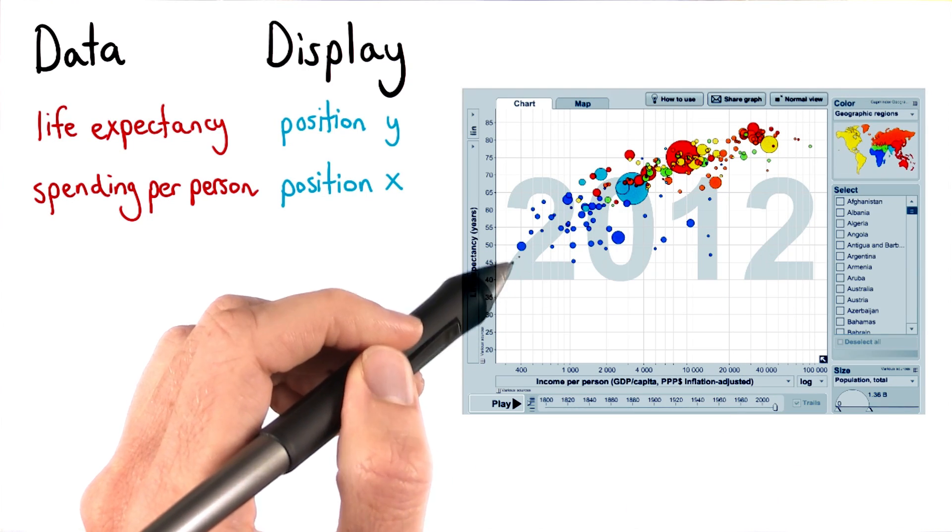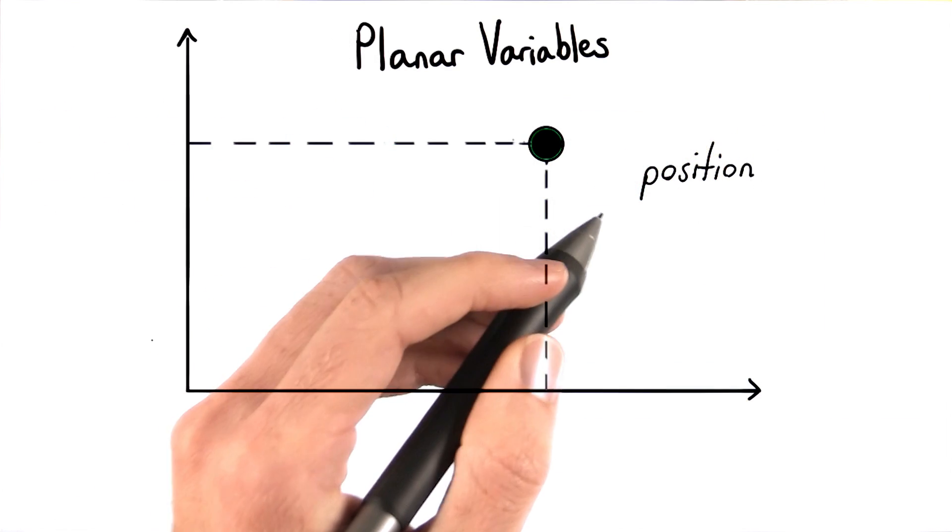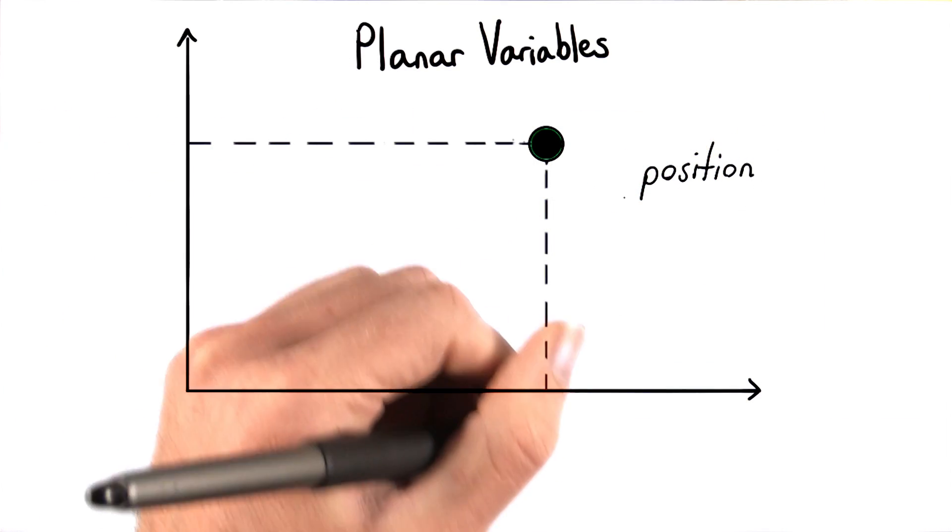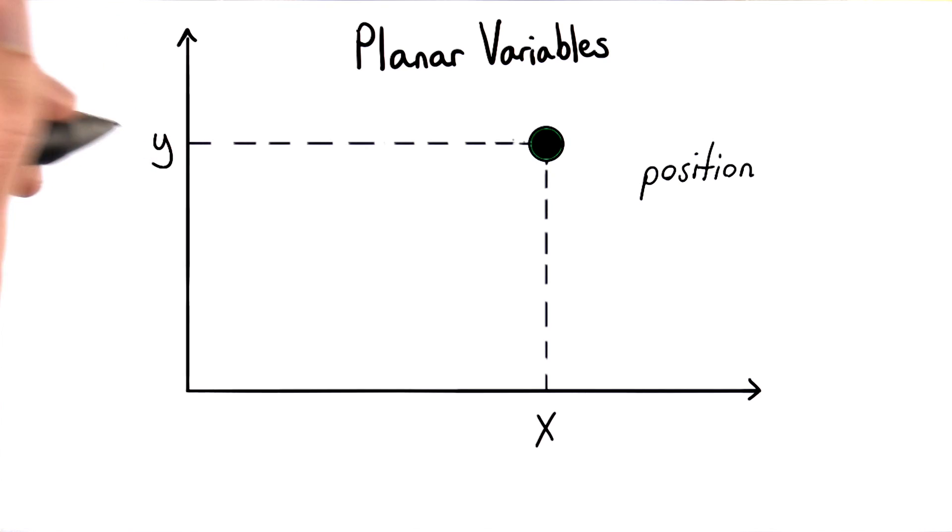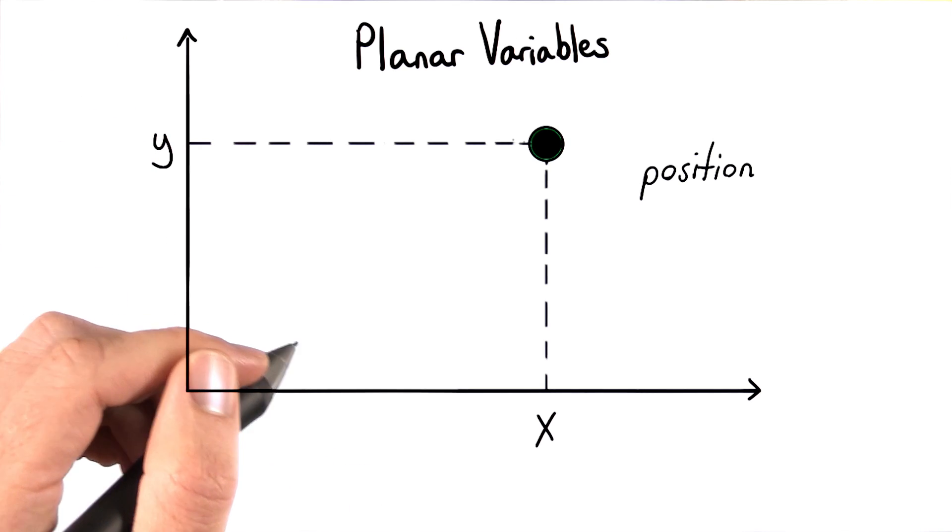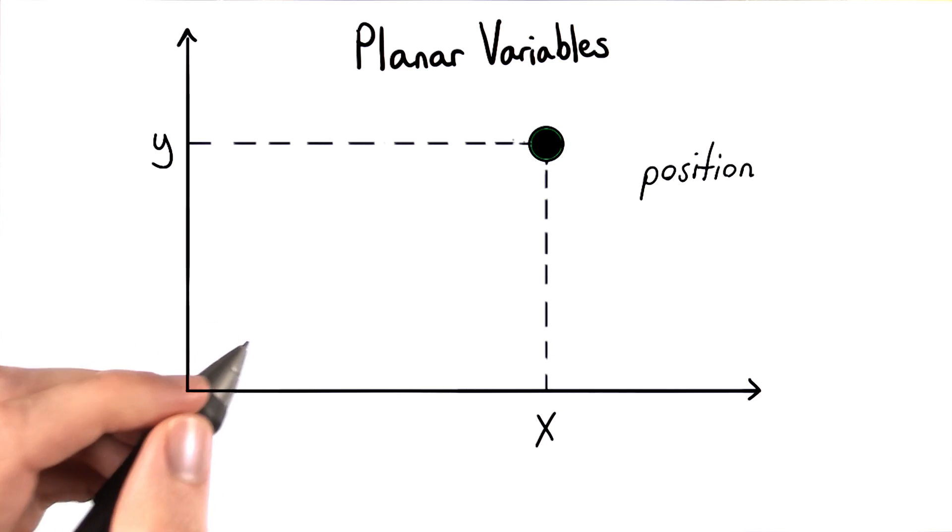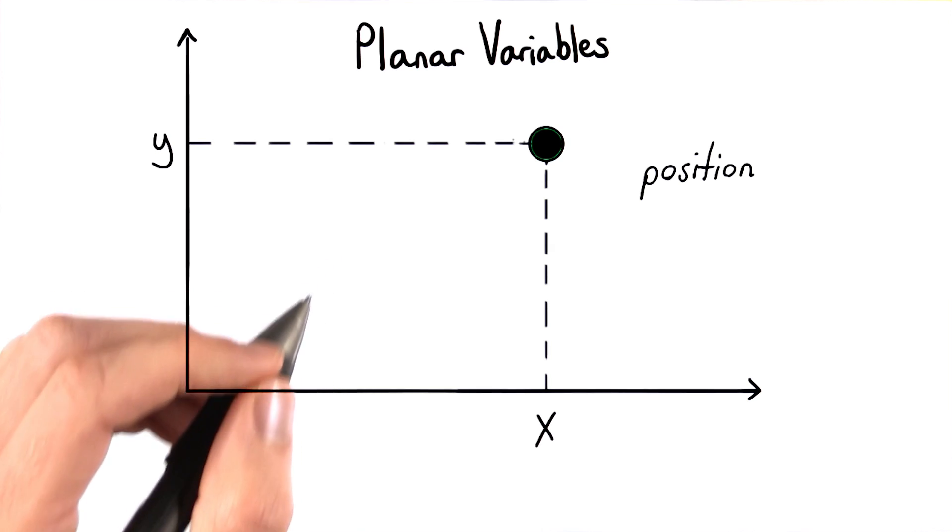The opposite would be true for the countries in the lower left of the graph. Position is considered a planar variable because it locates points in space. It's probably one of the most prominent visual encodings you'll see in data visualizations, and it's also a display element that we can perceive with great accuracy.